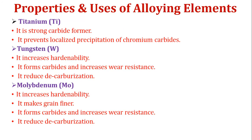Then titanium: it is a strong carbide former and prevents localized precipitation of chromium carbides. Tungsten: it increases hardenability, forms carbides and increases wear resistance, and reduces decarburization — burning of carbon is called decarburization. Next, molybdenum: it increases hardenability, makes a grain refiner, forms carbides and increases wear resistance, and reduces decarburization.